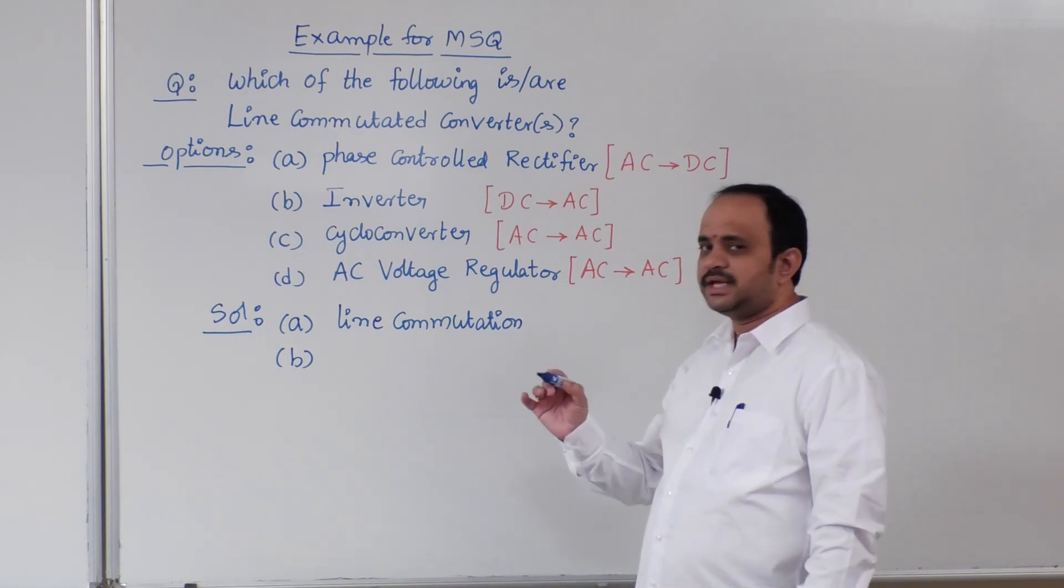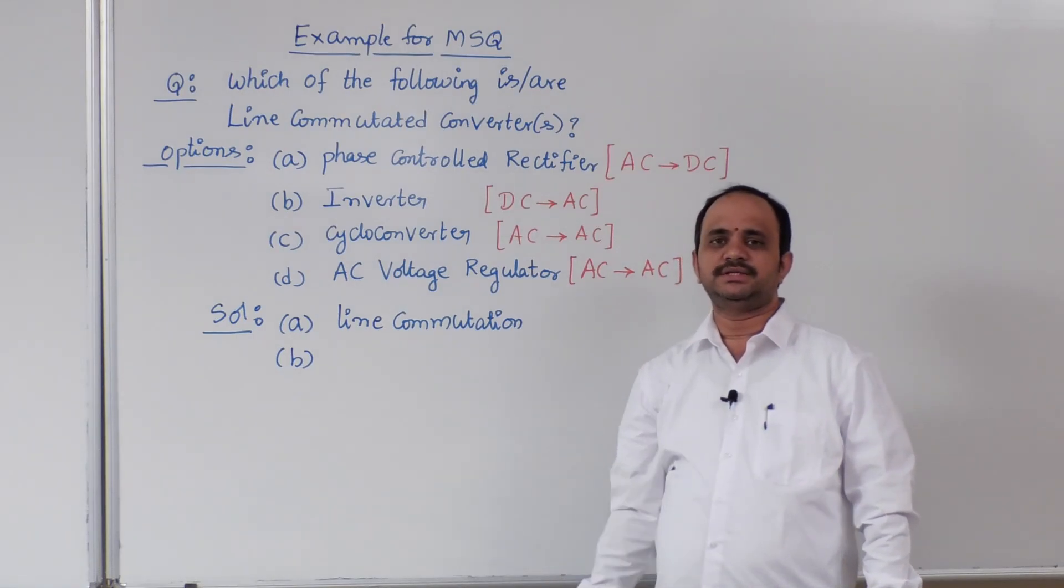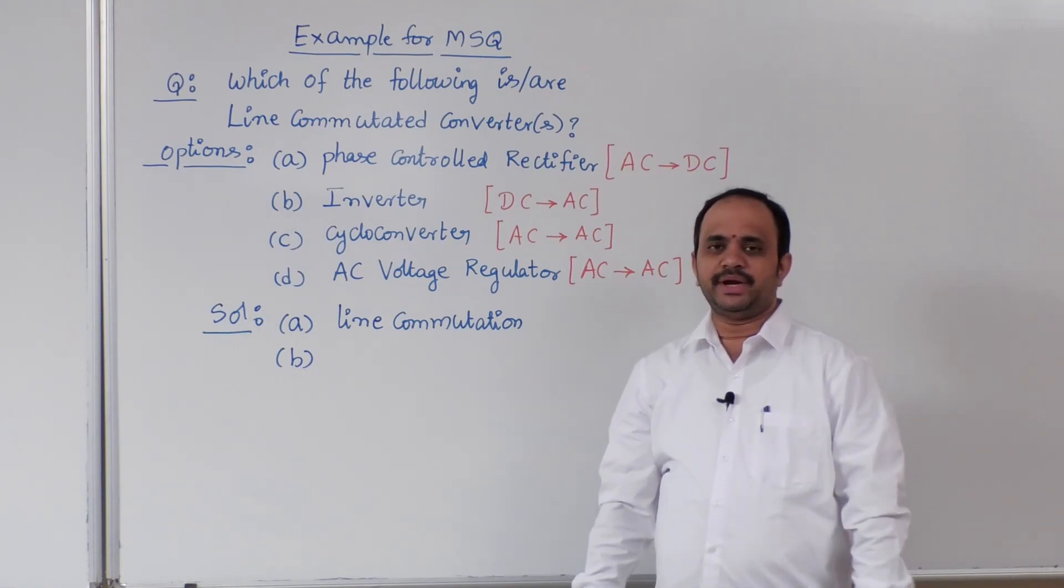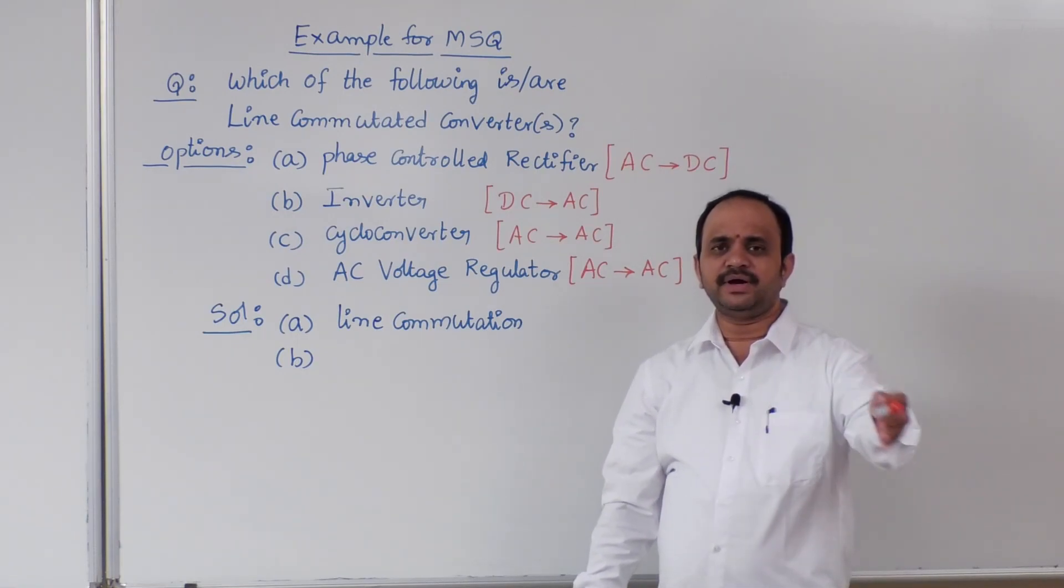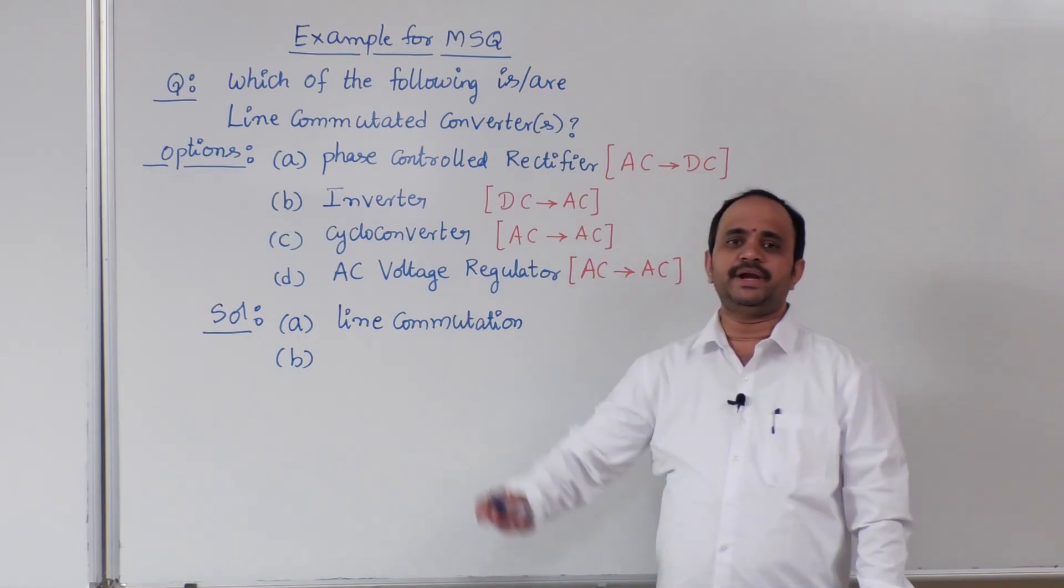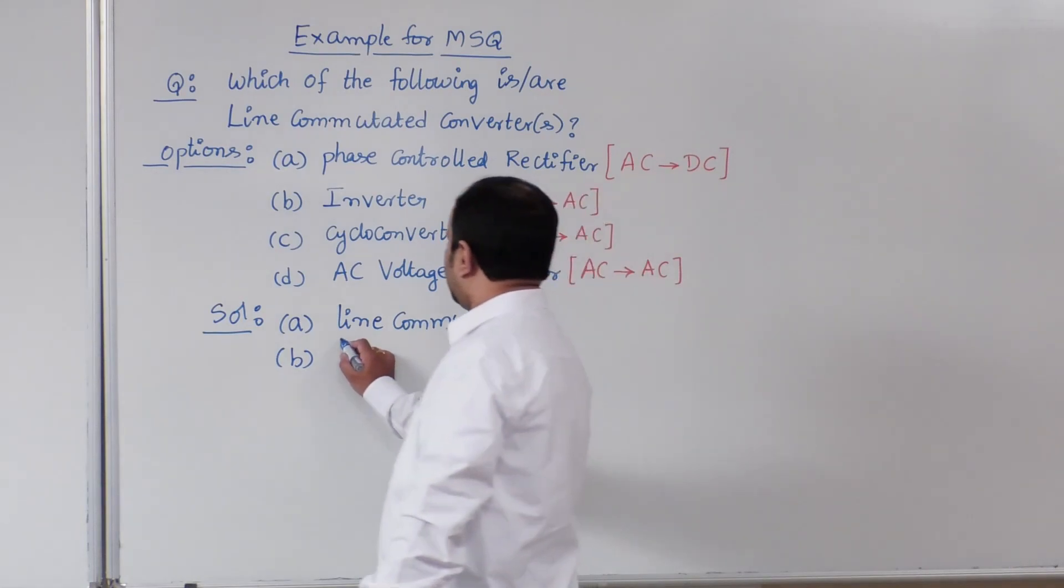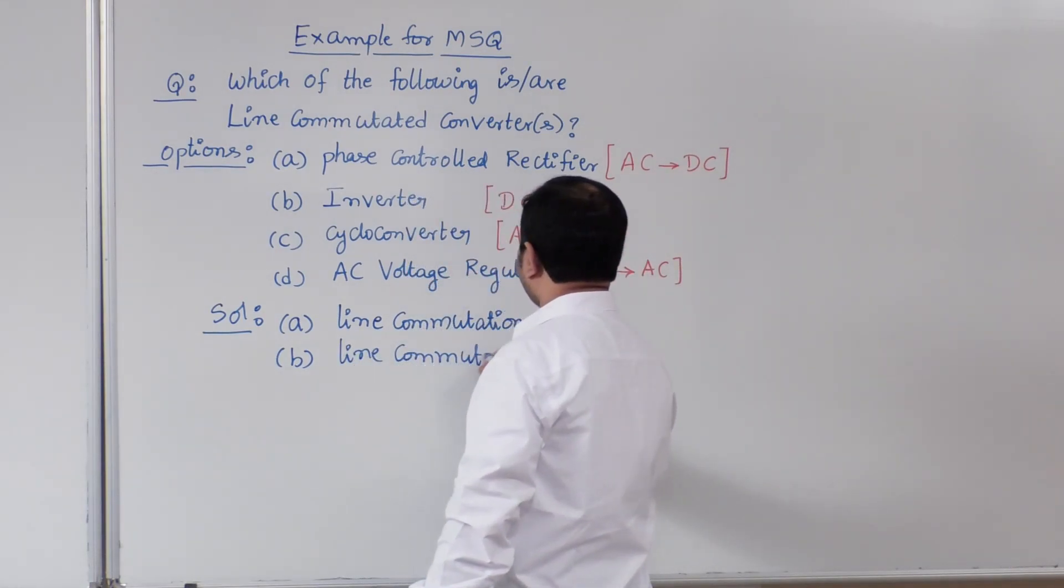For example, if you look into single phase and three phase fully controlled bridge rectifiers, when they are operating as alpha greater than 90 degree, it will be operated as inverter. Such a circuit is called line commutated inverter.